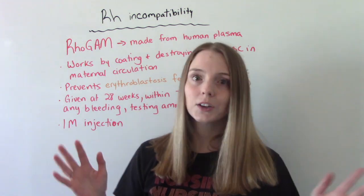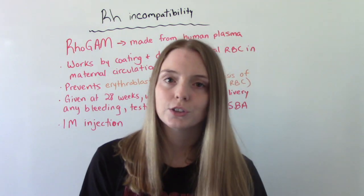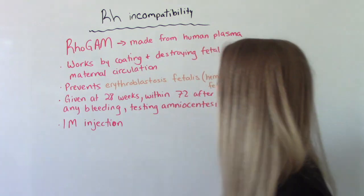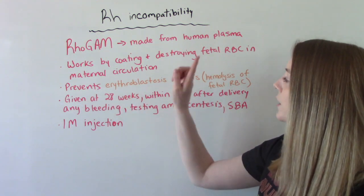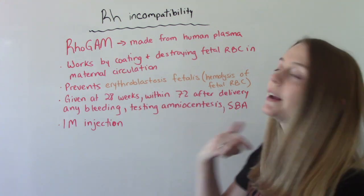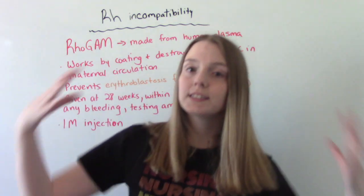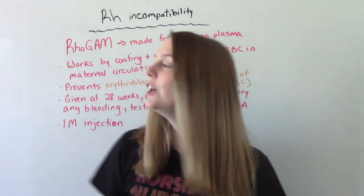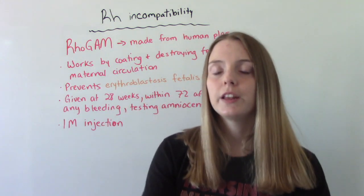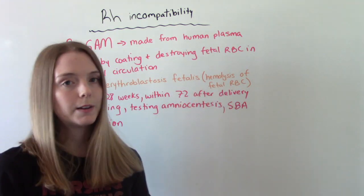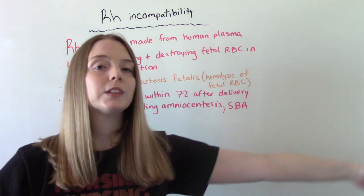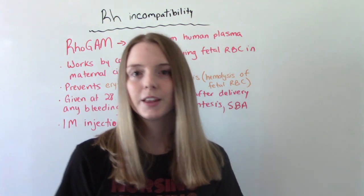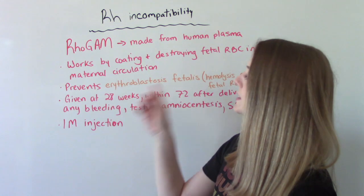These are the fetal red blood cells that are in mom's circulation — this does no harm to the baby at all. The whole goal of RhoGAM is to prevent something called erythroblastosis fetalis. Basically, that means mom's been sensitized through isoimmunization and her body has made the antibodies. RhoGAM prevents those antibodies from attacking and causing hemolysis of the baby's red blood cells, because if we did absolutely nothing and this occurred, it would kill the fetus.